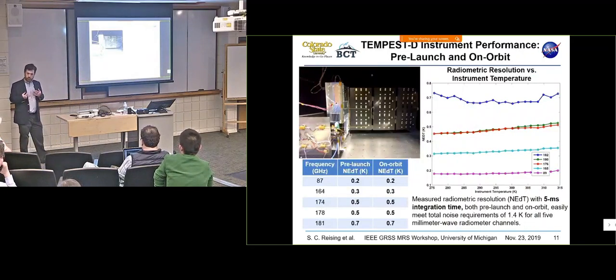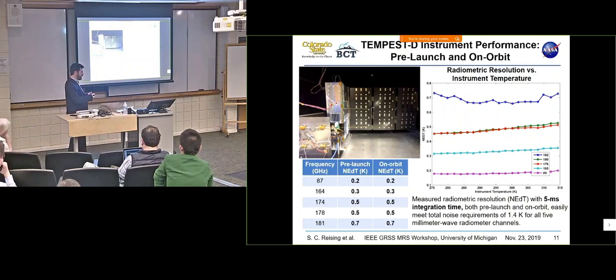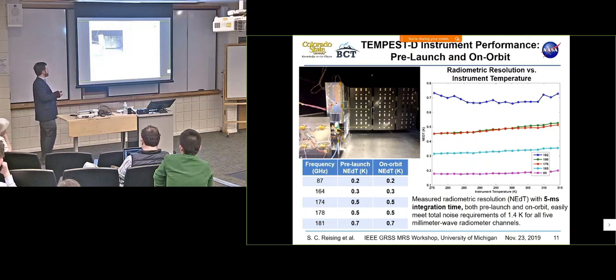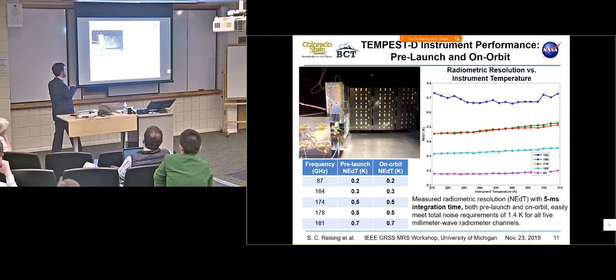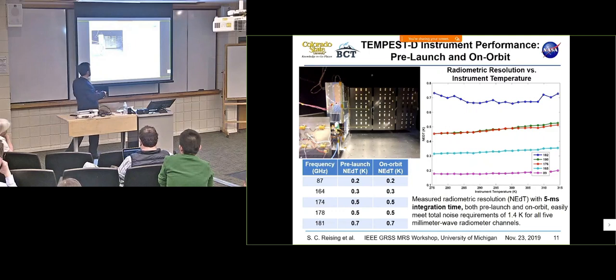So the instrument was tested at JPL for space-like conditions and thermal vacuum as well as vibration tested. It passed all that with flying colors and then was delivered to Blue Canyon Technologies. Blue Canyon Technologies integrated it in the spacecraft bus and this is a photo in thermal vacuum. The instrument is the four U out of six U right here.